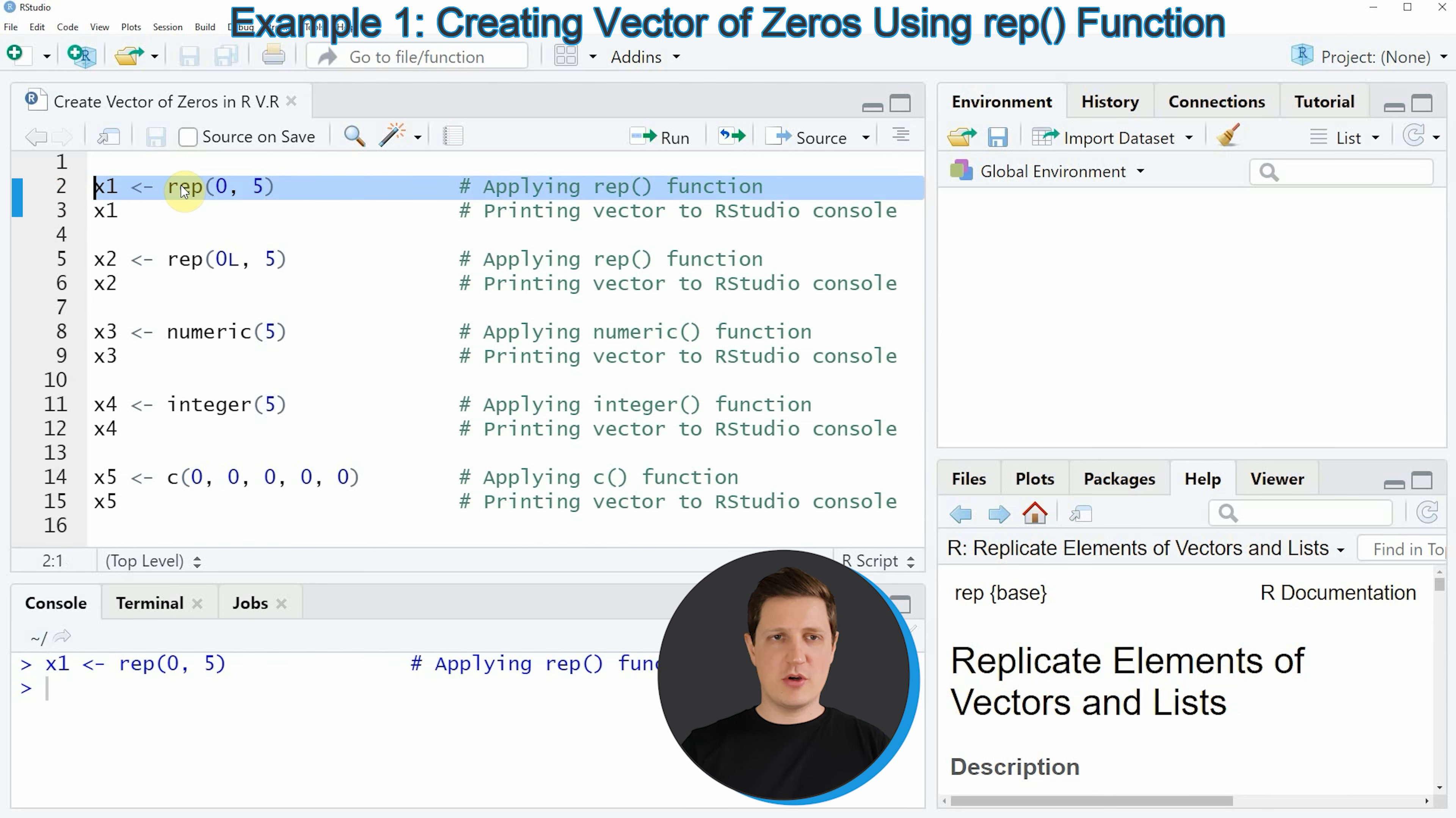If you run line 2 of the code you can see that a new vector object is created at the top right of RStudio which is called x1 and we can print this vector to the RStudio console by running line 3 of the code. Then you can see at the bottom in the RStudio console that we have created a new vector object consisting of five zeros.